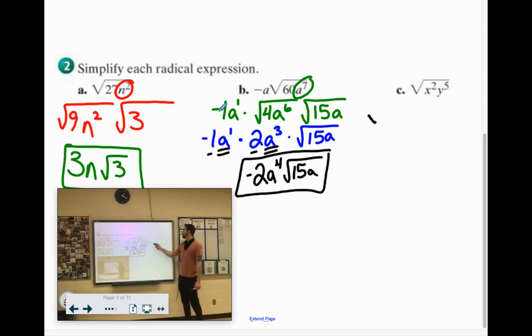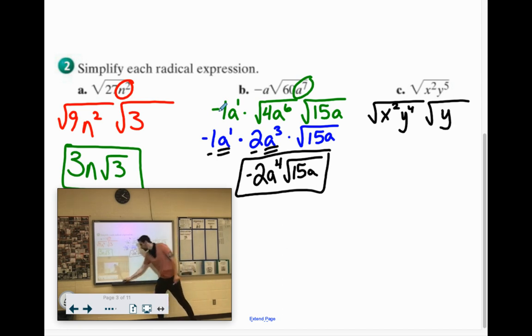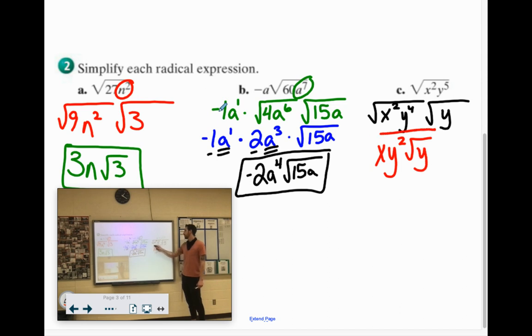All right last one. Oh all variables. Remember the perfect things are the even exponents. x² that's all perfect. y⁵. No no no. It's got to be y⁴. And then the fifth y goes in the leftovers. Square root of x² is x¹. Square root of y⁴ is y². And then we have our leftover √y. Fantastic.